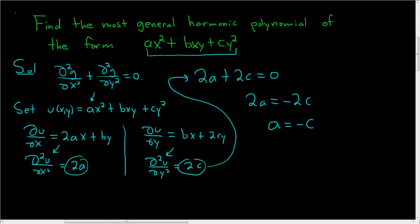So finally, we can write the answer down. So the most general harmonic polynomial will be u of xy equals ax squared plus bxy. And we know something about c. Well, c is equal to negative a. It might be better to write it that way. So this is minus a y squared, because c is negative a. And that is the final answer.